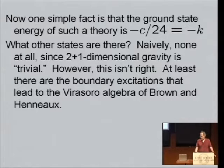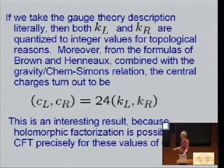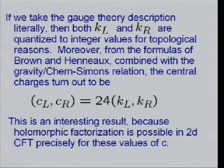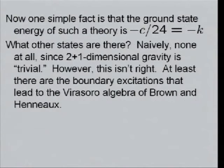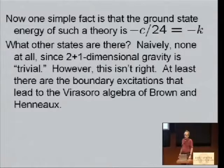Now, one simple fact is that the ground state of such a theory is -C/24, which is -K. And that's actually the simplest way we're going to see that C should be divisible by 24 for holomorphic factorization. The ground state of energy has to be an integer if the left-movers by themselves should be a good modular invariant theory. But it actually is -C/24, so we want C/24 to be an integer. So it was kind of nice when we got this 24 by computing the central charge, but there was a little bit of sleight of hand left. I won't try to explain it now, but if you wish, you can look in the paper.